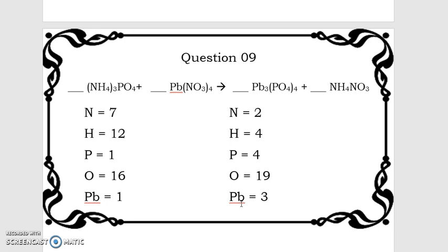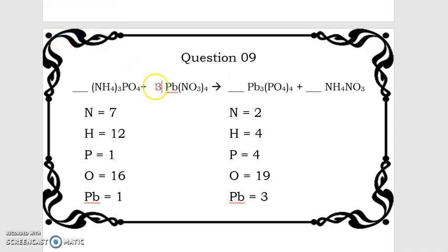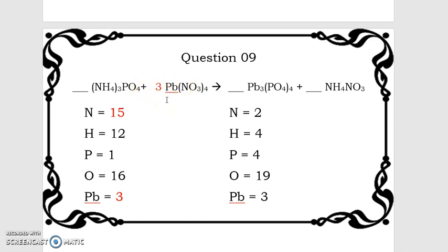Initially this equation looks really difficult to balance because our nitrogen count of 2 doesn't multiply into 7. So I'm going to start with something easier — balancing the leads. 1 can go into 3, so I'll change this coefficient to 3. That changes the lead count to 3. It also affects the nitrogens and oxygens: 4 nitrogens times 3 gives 12, plus 3 more is 15. Oxygens: 3 times 4 is 12, times 3 is 36, plus 4 is a grand total of 40.